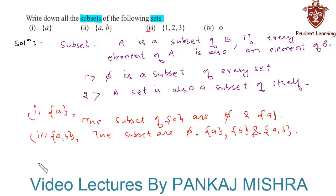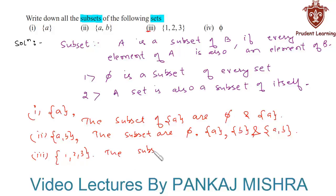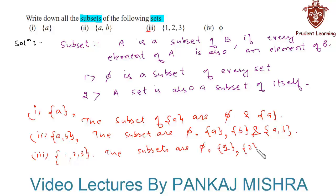Moving on to the third section, here we have a set that contains elements 1, 2, and 3. The subsets of this set are: the null set, the set containing element 1, the set containing element 2, the set containing element 3.